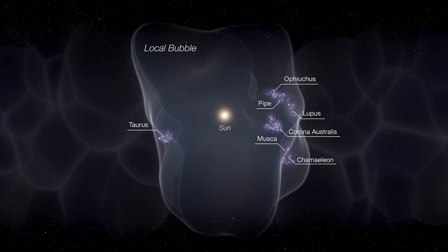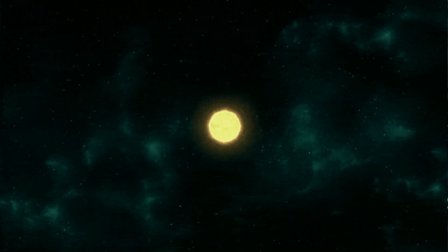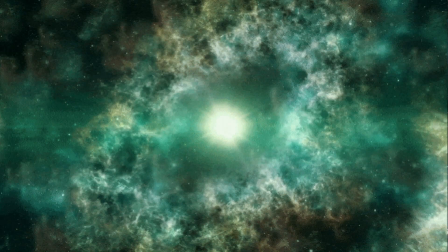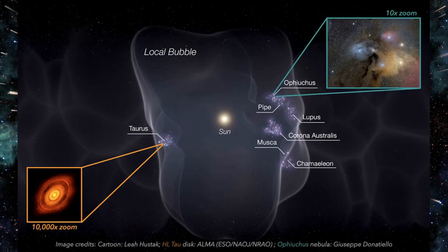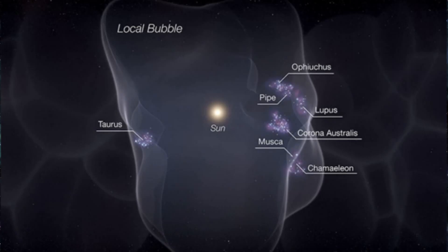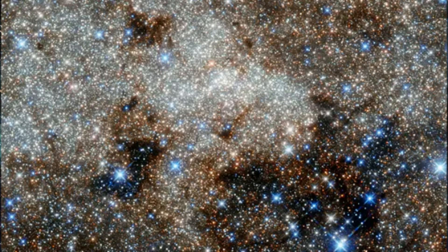So how did it form? The Local Bubble is believed to be the product of a series of supernovae, the explosive deaths of massive stars that erupted millions of years ago. The shock waves from these colossal explosions swept through the interstellar medium, clearing out gas and dust and creating the cavity we now inhabit. Interestingly, the Local Bubble is not completely empty. It contains a thin hot gas with a temperature exceeding a million degrees Celsius. This gas is too hot for most star formation to occur within the bubble itself. However, the bubble's edge might play a role in triggering star formation in the denser clouds surrounding it.